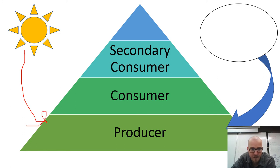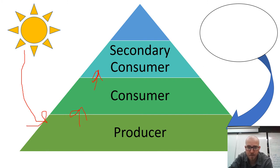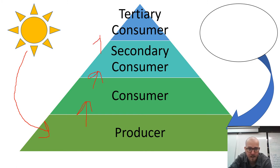Energy goes from the sun to the plants, from the plants to the herbivores or primary consumers, and then from the herbivores to the carnivores — the secondary consumers. For examples: we could have grass as a producer, deer as a consumer (they're herbivores that eat grass), and wolves as a secondary consumer. Then from secondary consumers we go to tertiary consumers, something like mountain lions — the top of the food chain, also known as an apex predator.